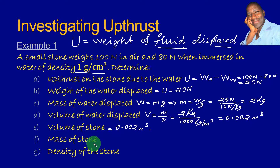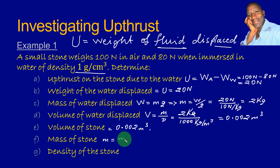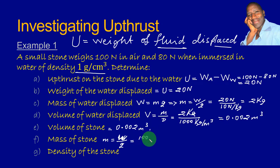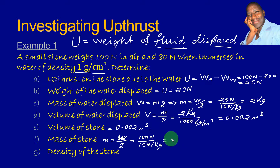Next, we want to calculate the mass of the stone. This can be worked out using the weight of the stone in air. Mass is equal to the weight of the object divided by the gravitational field strength. The weight of the stone in air is 100 newtons, and the value of g is 10 newtons per kilogram. This gives us the mass of the stone as 10 kilograms.